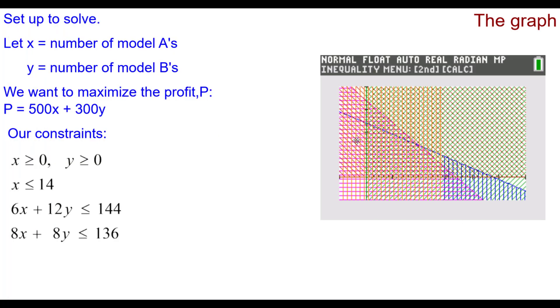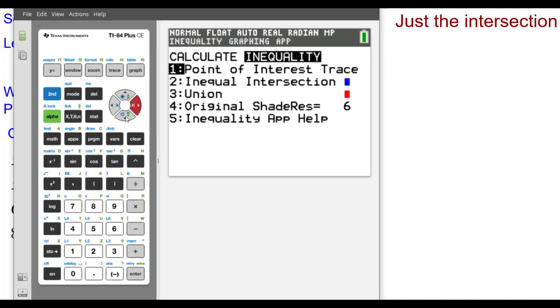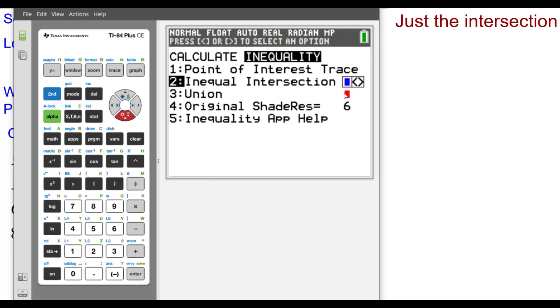But we're more interested in just the intersection. So I'm going to use the feature Second Trace to get the inequality intersection right here, and it will be in blue.